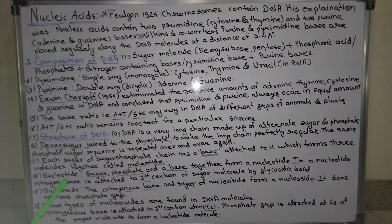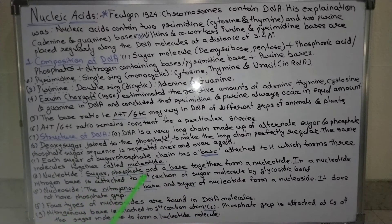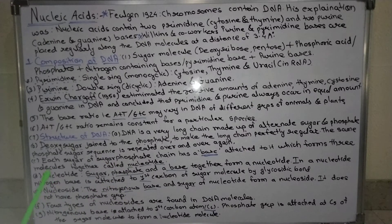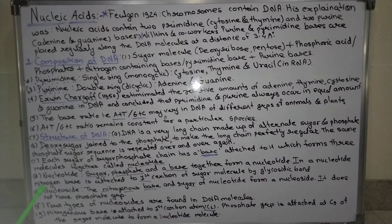A nucleotide is made of sugar, phosphate, and a base - either a pyrimidine or purine base. The nitrogenous base is attached to the first carbon of the sugar molecule by a glycosidic bond.